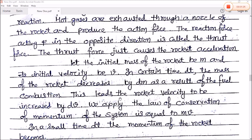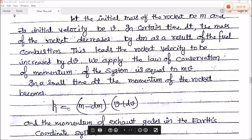This leads the rocket's velocity to be increased by dv. We apply the law of conservation of momentum. That means the initial momentum of the rocket and the momentum of the rocket becomes the same.